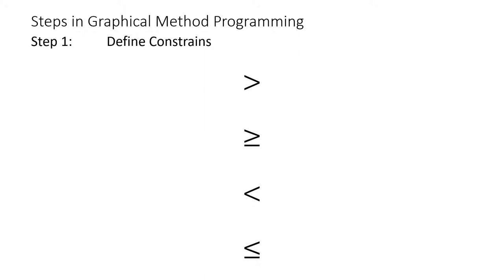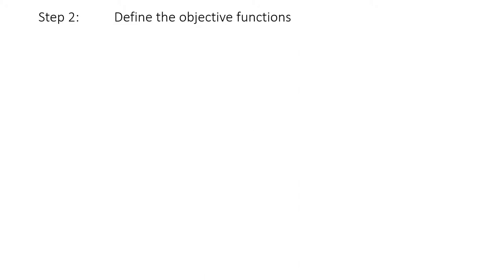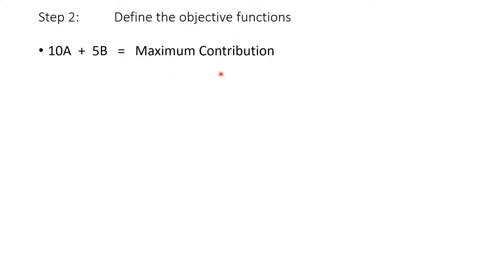For example, if the objective is to maximize the contribution of student enrollment of course A and B, having a contribution per unit of 10 Naira and 5 Naira respectively, your objective function shall be: maximize Z = 10A + 5B. That will be the maximum contribution from each of the courses. This means the objective is to maximize the total contribution of the school system by admitting the optimal mix of product A and B.